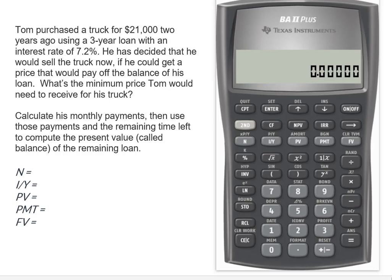So we need to get our time value of money stuff together here. He got a three-year loan and he was making 12 monthly payments, so he had a total of 36 loan payments. His interest rate was 7.2% but since he's making monthly payments we have to convert that to a monthly interest rate which comes out to 0.60. Remember when your N is in months your I/Y has to be in months.